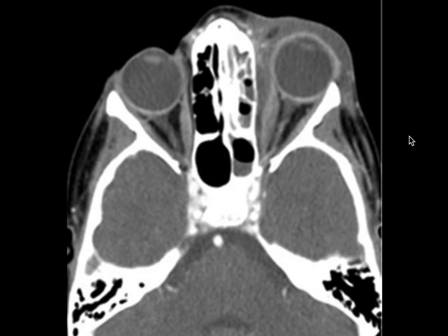Classic appearance which we should never forget — a very common entity. You can see preseptal thickening, fluid, and subperiosteal fluid collection. Left ethmoid sinusitis with a lot of soft tissue edema in the left periorbital region — all features of stage 2 orbital cellulitis, preseptal cellulitis due to left ethmoid sinusitis.